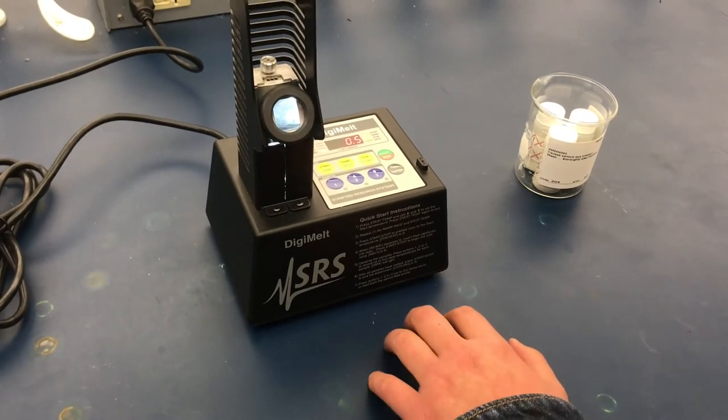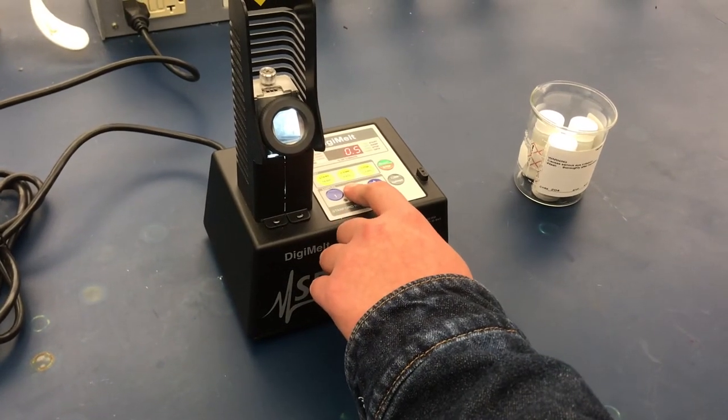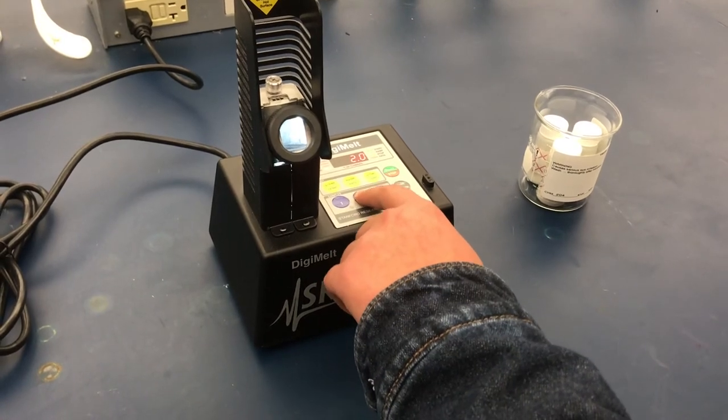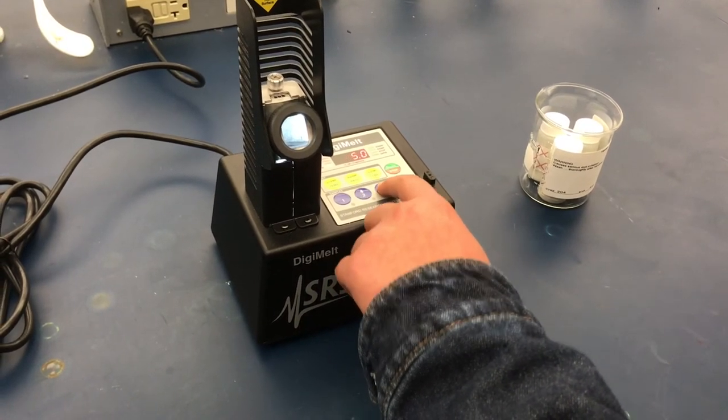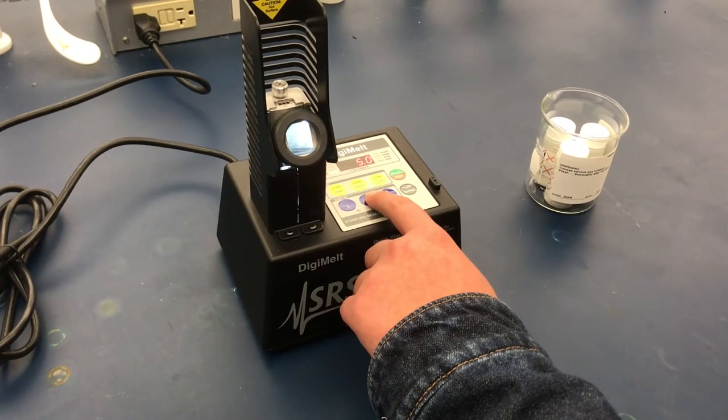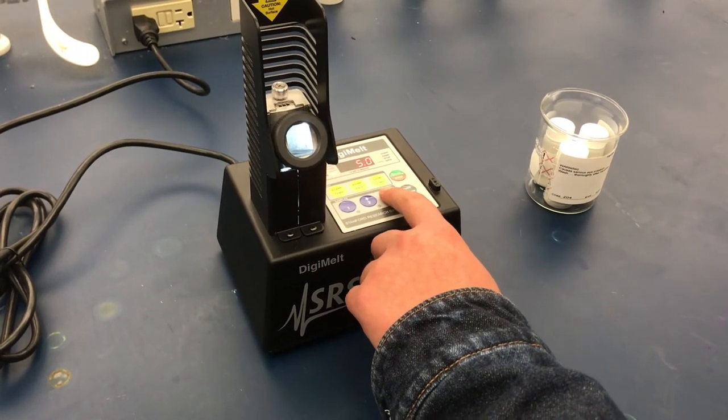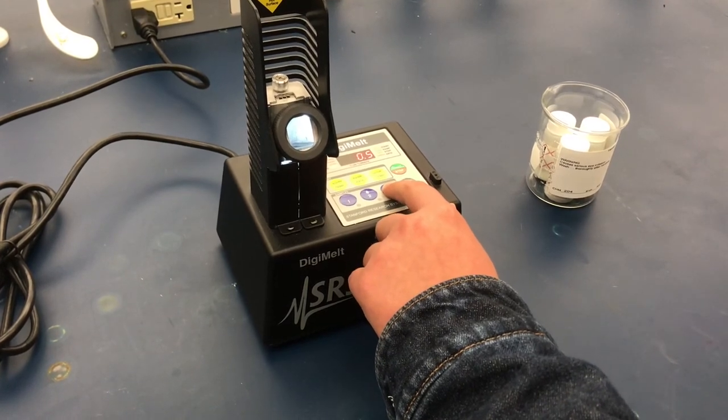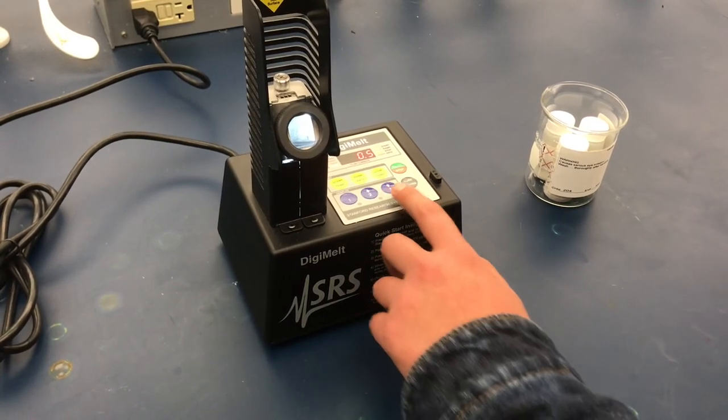Then press ramp rate. If this is your first trial or you are unsure of the melting range, adjust the ramp rate to five degrees Celsius per minute or more. For the second trial or if you know the melting range, set the ramp rate to one degree Celsius per minute or 0.5 degrees Celsius per minute for better accuracy.